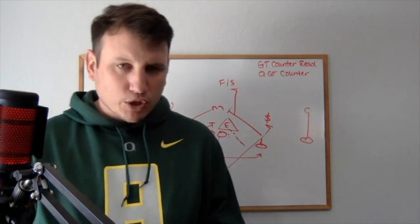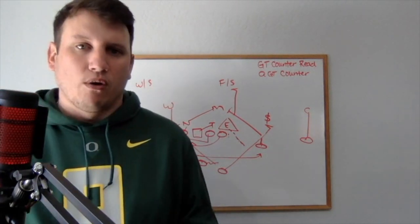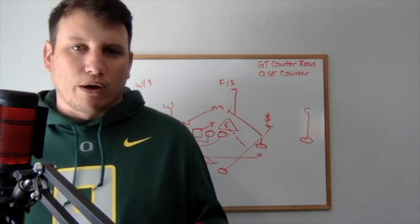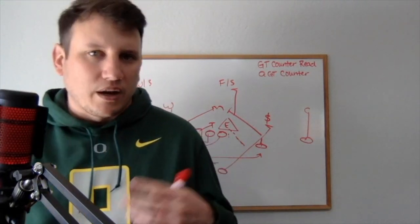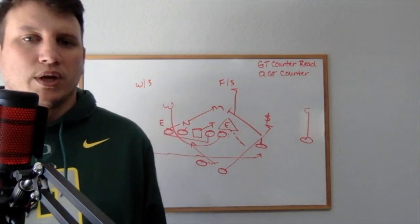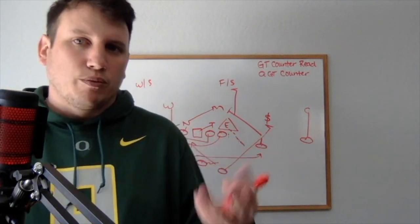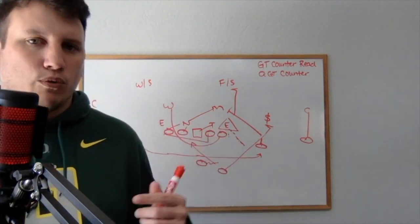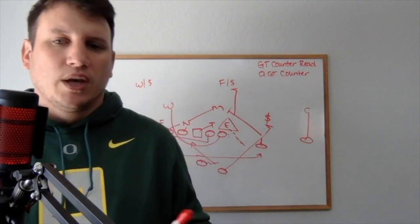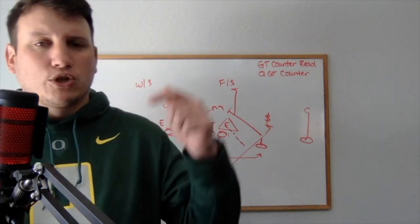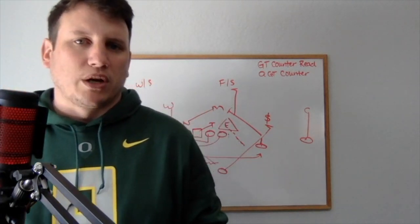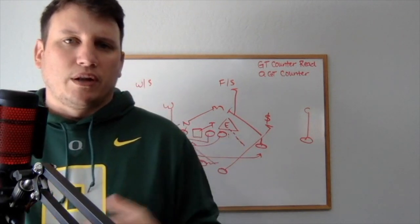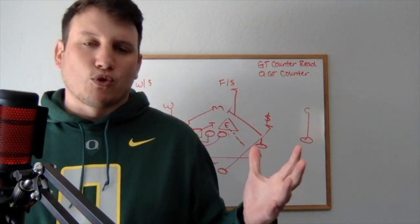Those are two simple concepts that I think should be in your playbook — especially if you have a quarterback that can run and you're already running counter tray. These are nice wrinkles to counter tray, and there's a lot of different things you can do with jet motion. Hopefully you found the video useful and found a couple of new ways to run counter tray with jet motion. Please give it a thumbs up, hit subscribe, and thanks for being here. Don't forget: play fast, score fast, and run the spread.